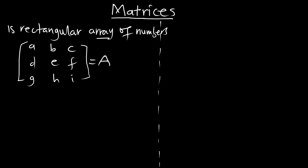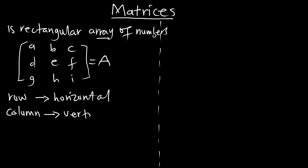As we learn more about matrices, we should know about rows and columns. In a matrix, the horizontal components are the rows whilst the vertical components are the columns. So here we can see a, b, and c as a row, and a, d, g as a column.